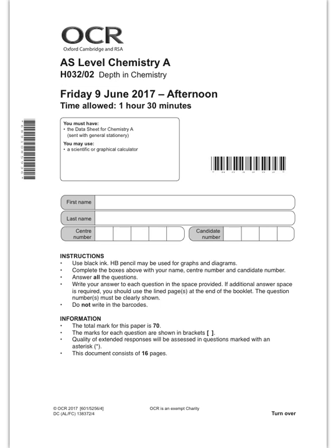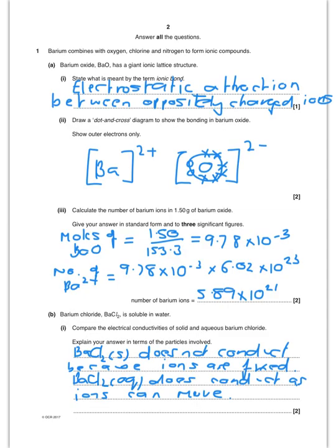So we'll do a walkthrough from the depth in chemistry from June 2017. Question 1, we start off with ionic bonding.